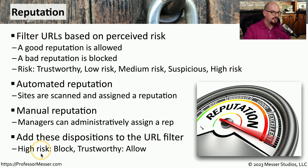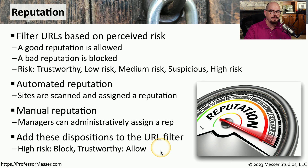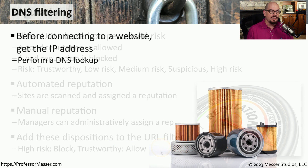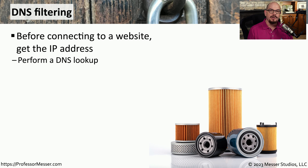If anything is categorized as high risk, you may decide to block that traffic, and anything that has been clearly marked with a reputation of trustworthy would be allowed. There's also a way to provide content filtering without a next-generation firewall, a proxy, or a URL filter. Instead, you can use DNS filtering — this is the domain name system, and every time you connect to a website, this is the device that provides an IP address when you give it a fully qualified domain name.